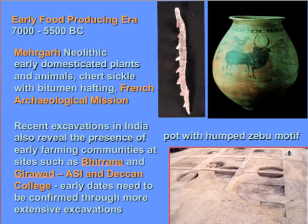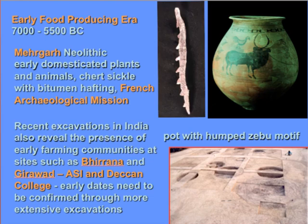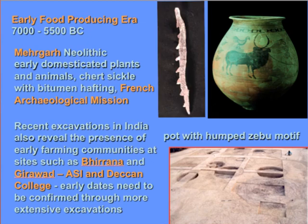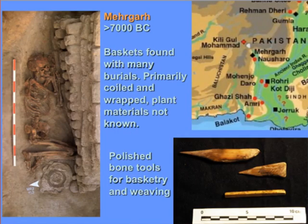The early food-producing era is the period when people began to settle down, domesticate plants and animals, and exploit different resources. This was happening in the Indus Valley itself as well as to the west in Baluchistan, where we have the site of Mehrgarh excavated by the French mission. We also have new evidence from the other side of the Indus Valley, in the Ghaggar-Hakra River region, at the sites of Birana and Giraur, excavated by ASI and the Deccan College, showing early dates similar to Mehrgarh. Mehrgarh is the site where we have clear evidence for early fiber technologies as well as basketry.